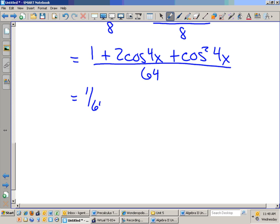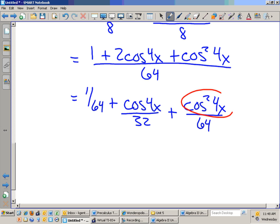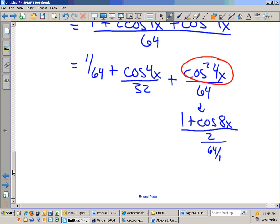That's 1 over 64 plus cosine of 4x over 32 plus cosine squared of 4x over 64. We're almost done. You can see we have 1 squared left. It is right there. I will insert 1 plus cosine of 8x over 2 over 64 over 1. That gives me a final result of...